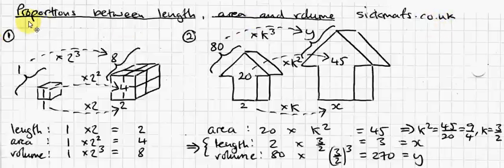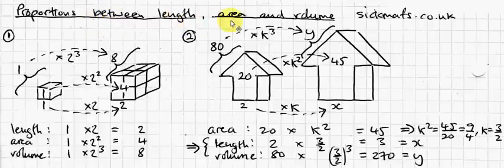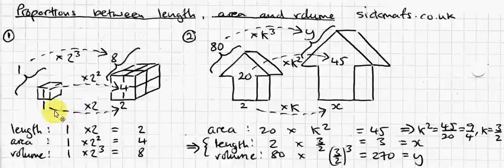Anyway, this video is about proportions between length, areas, and volumes. What do I mean by that? Basically, there's a special relationship between the lengths of similar objects, it only works between similar objects like these two cubes, and their areas, their surface areas, and their volumes.